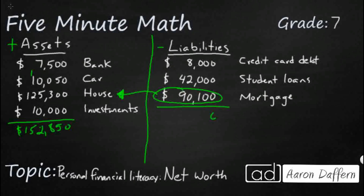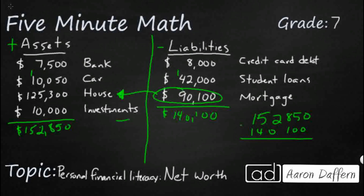So let's add up our liabilities. That's going to be $140,100 in total liabilities. So we simply subtract the two: $152,850 minus $140,100. That is going to be $12,750. So yeah, you have a lot of money — the bank and your house is worth a lot — but it was really the mortgage and the student loans. Your net worth is barely in the positive at $12,750.